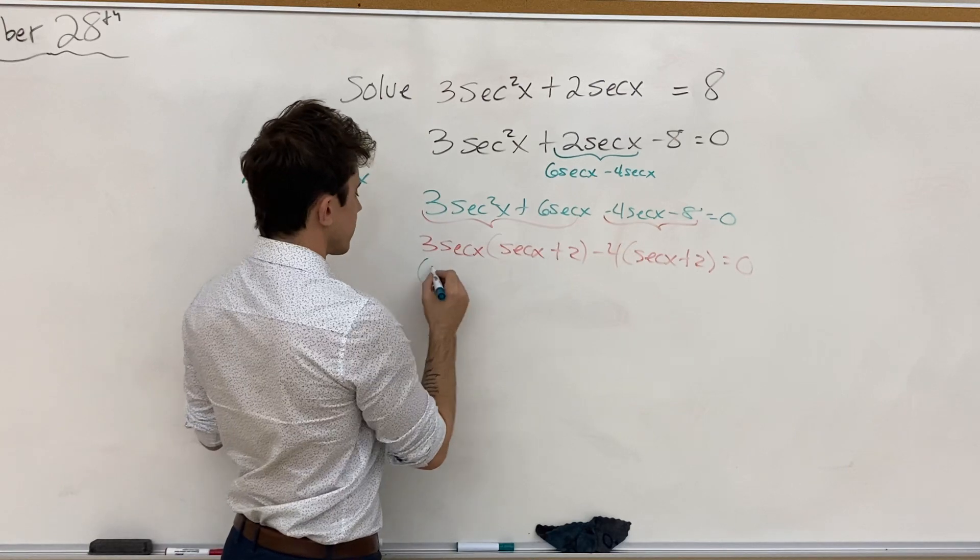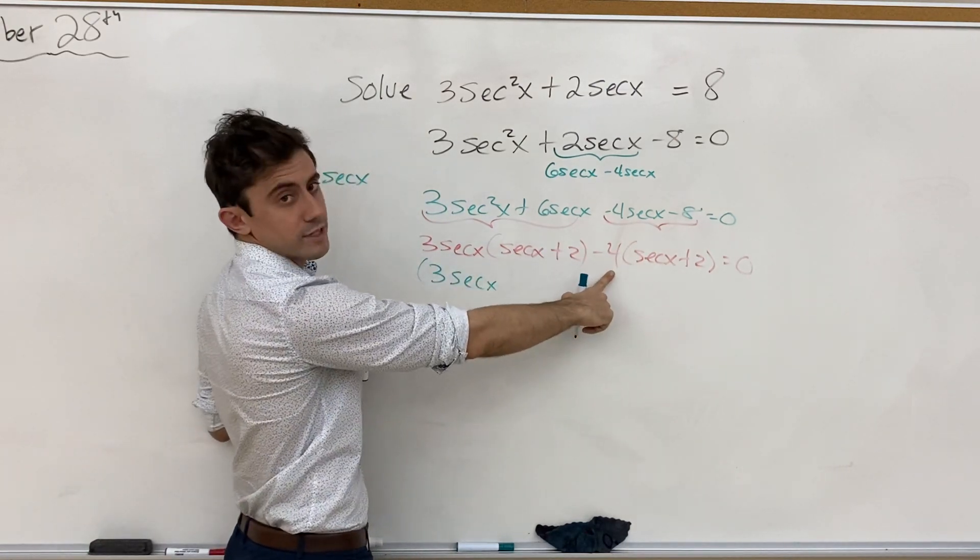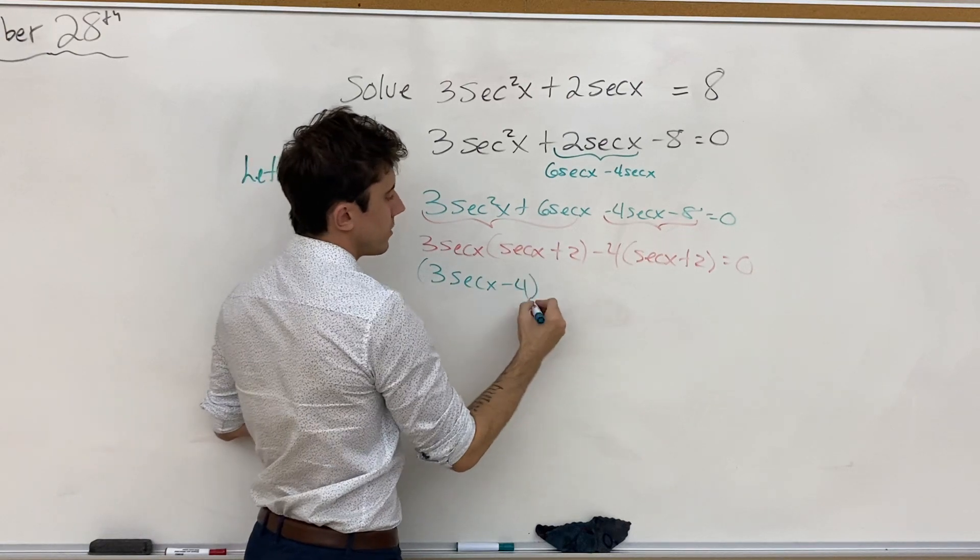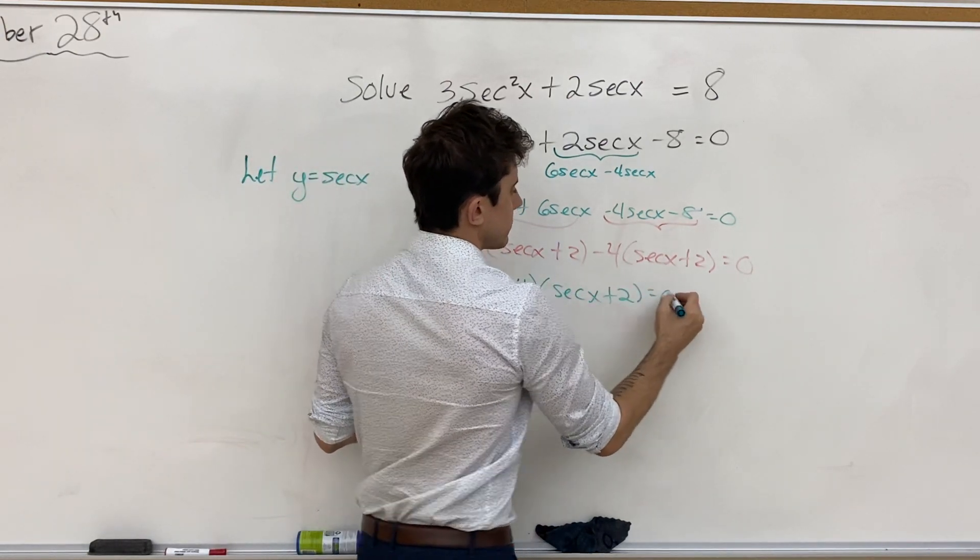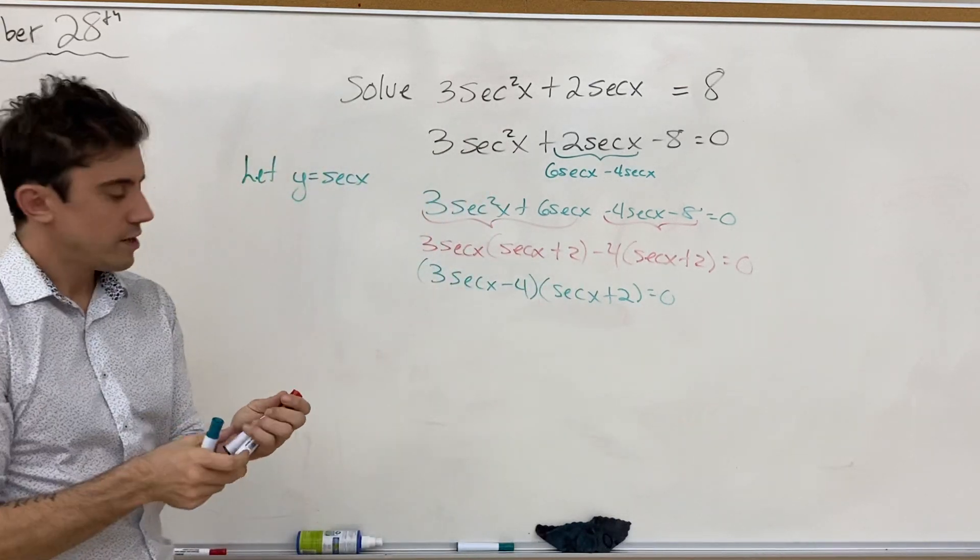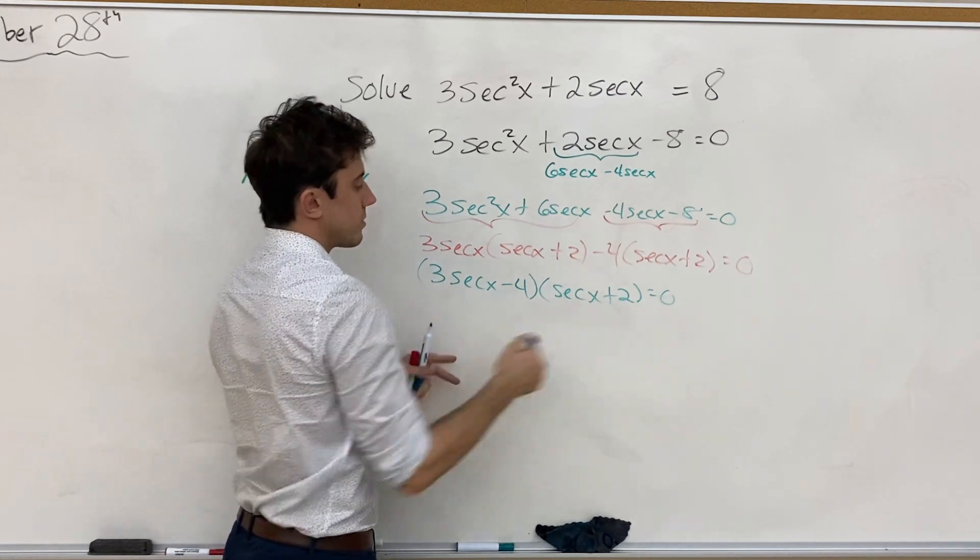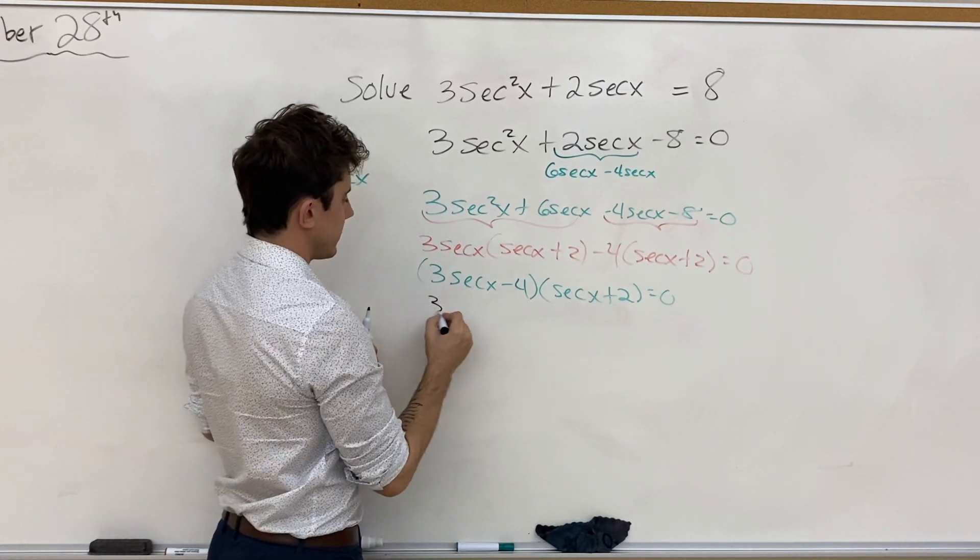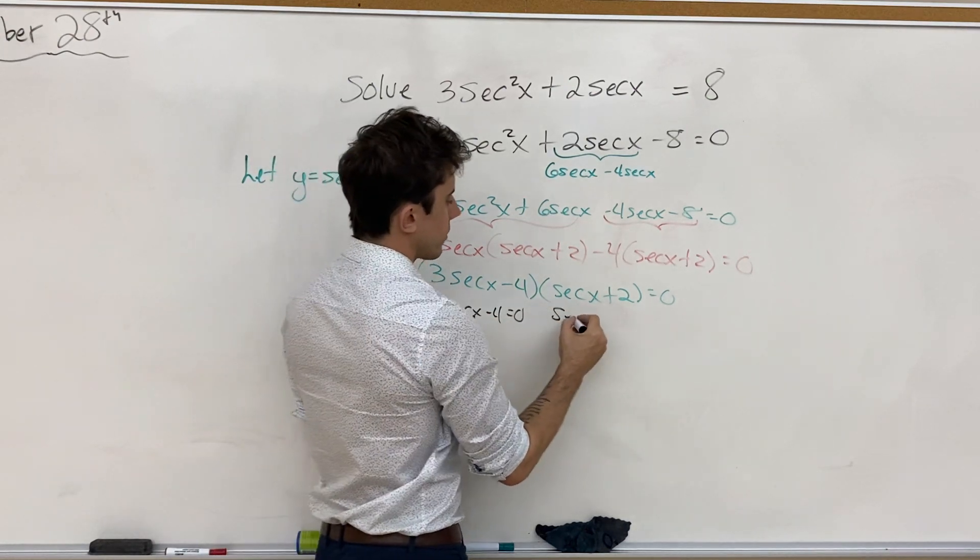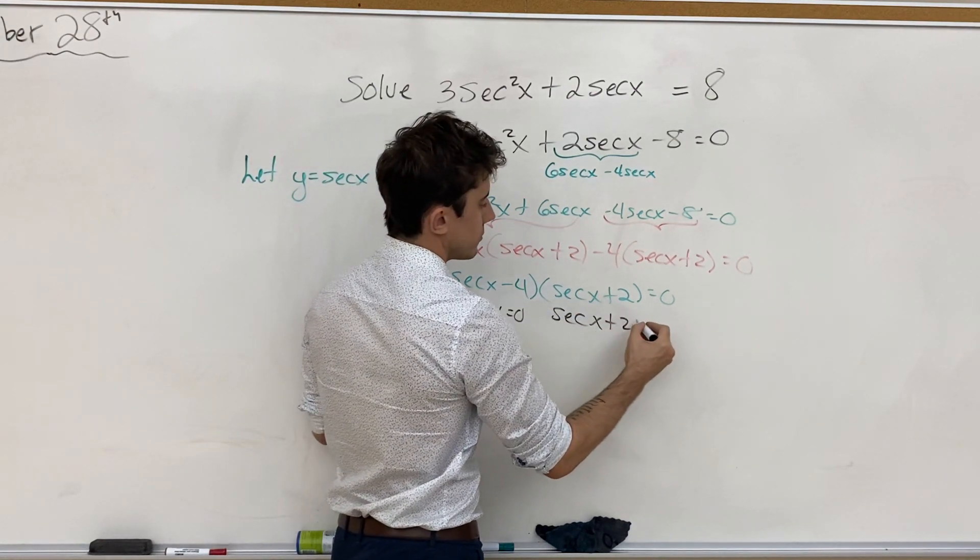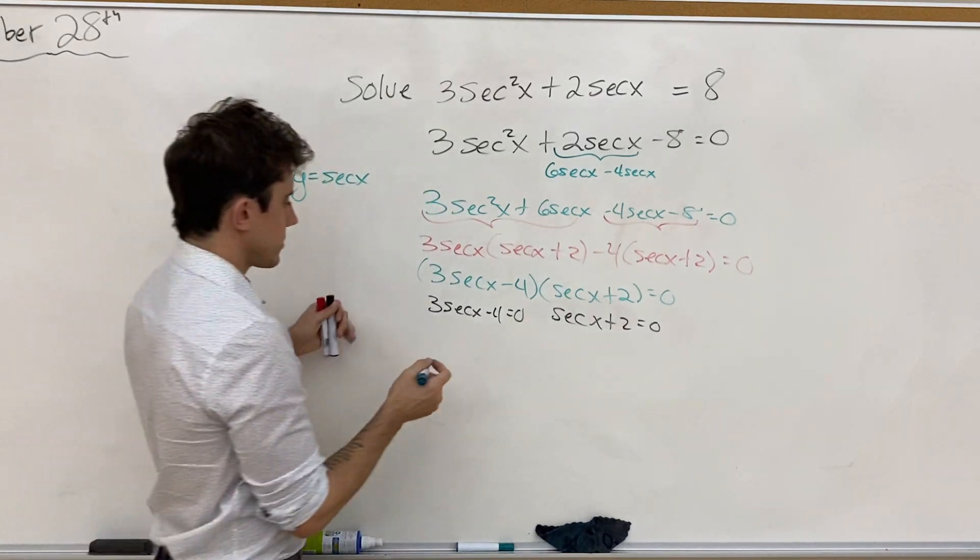And so now to factor completely, we have 3 secant x minus 4, and we have secant x plus 2 equal to 0. And by the null factor law, we know that for this product to equal 0, we either need 3 secant x minus 4 to be equal to 0, or we need secant x plus 2 equal to 0. And so that gives us solutions.